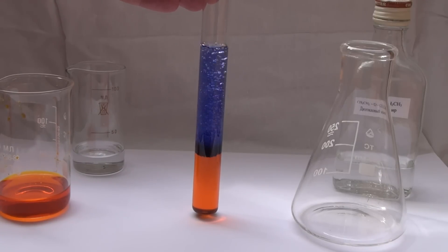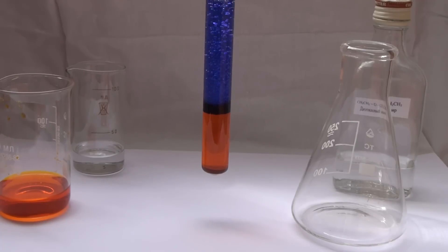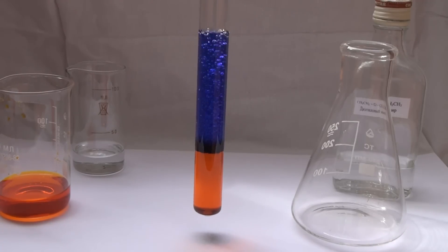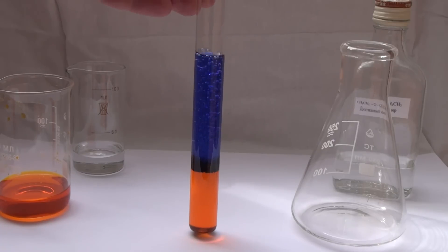After adding hydrogen peroxide, a very interesting transformation occurs. The fluid between the layers of ether and potassium dichromate becomes dark.